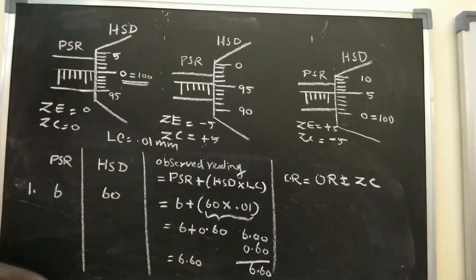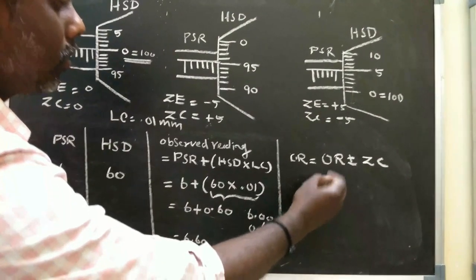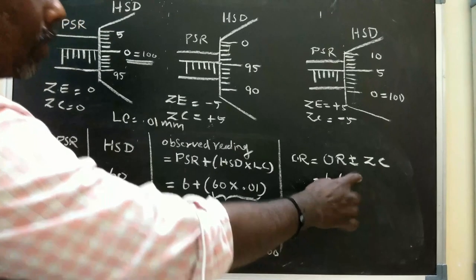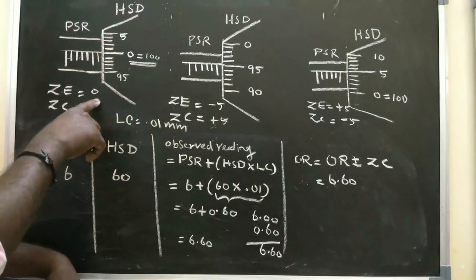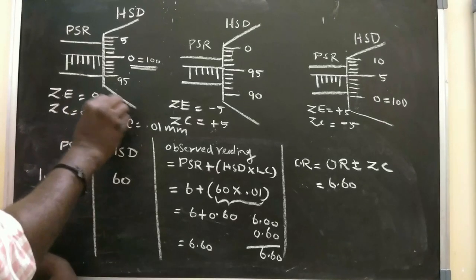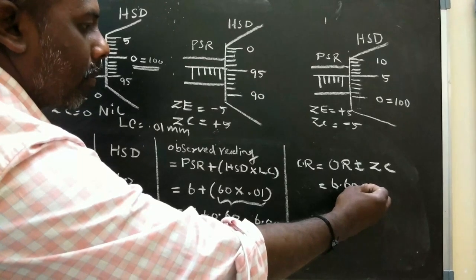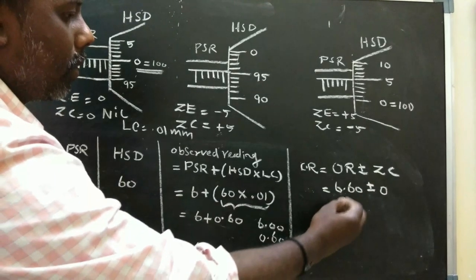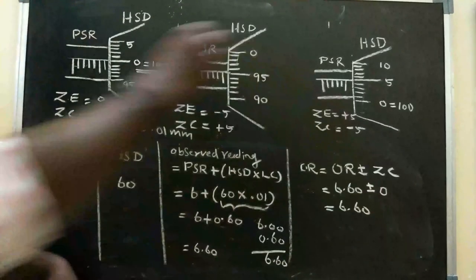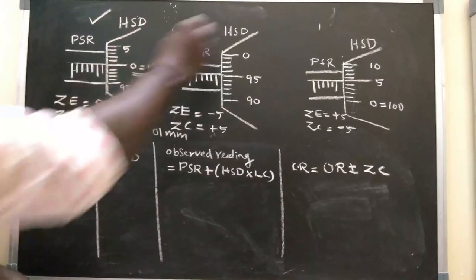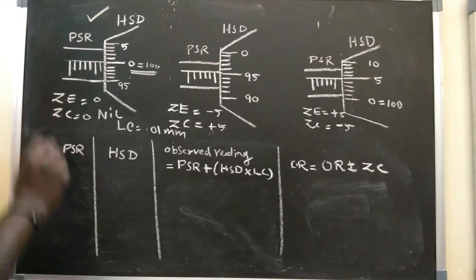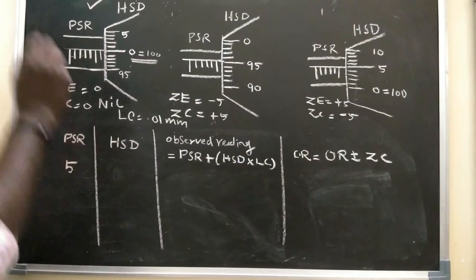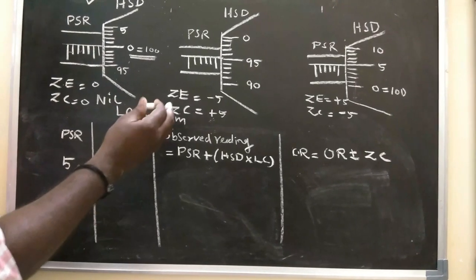Now for the correction: the correct reading equals the observed reading (6.60) plus or minus the zero correction. If there's a positive or negative error, we apply it accordingly. The PSR is 5 in the next example, with HSD approximately 72 or 73.